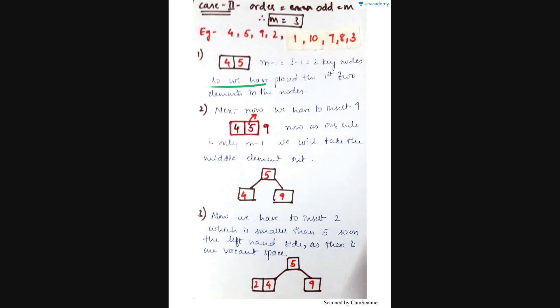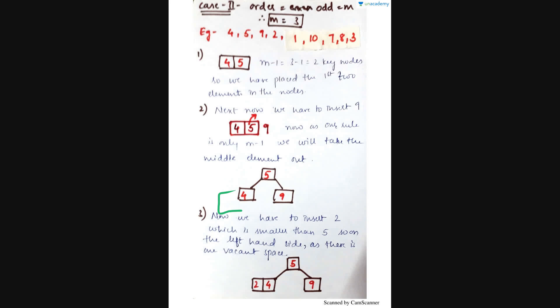Later I have to insert 9. We arrange them in ascending order and take the middle element. The middle element is 5. We remove 5 upward — so 5 is taken up and 4 is placed on the left hand side and 9 on the right hand side. Now I have to insert 2. Since 2 is smaller than 5, and next to the left only one element is placed with one more key node vacant, we can directly put 2 there.